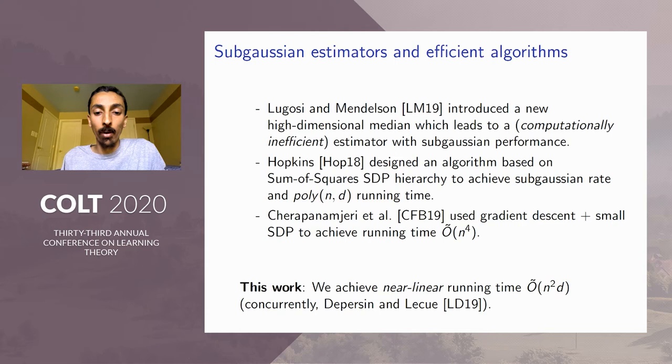So our main contribution is to achieve near-linear running time of n^2·d. So here the input size is, you know, we have n samples, each sample is a d-dimensional vector. So our running time is roughly n times the input size. And this is concurrently achieved by Depersin and Lecué.